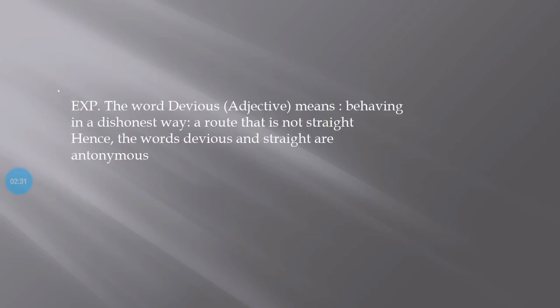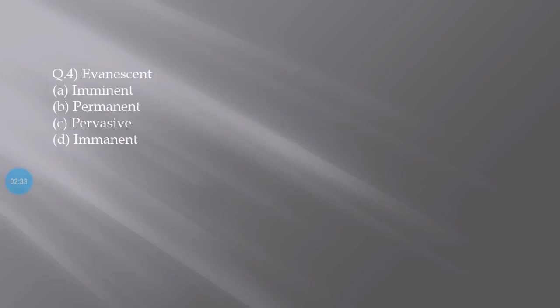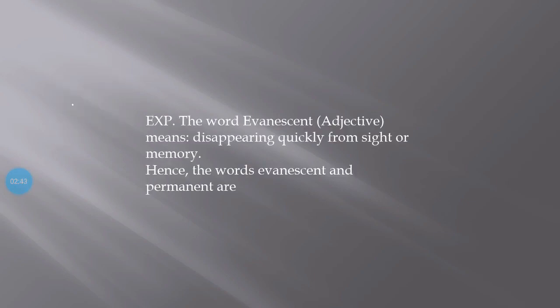The next word is evanescent. The opposite word options are eminent, permanent, pervasive, and immanent. The word evanescent means disappearing quickly from sight or memory - something that disappears from our memory or vision. So its opposite word is of course permanent.